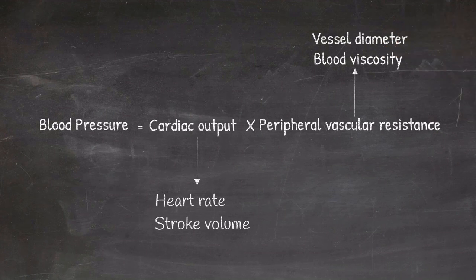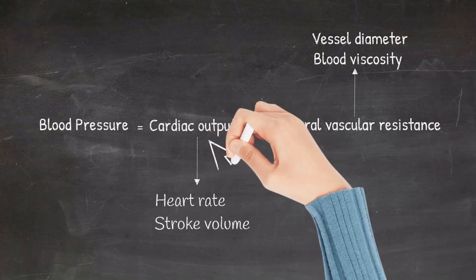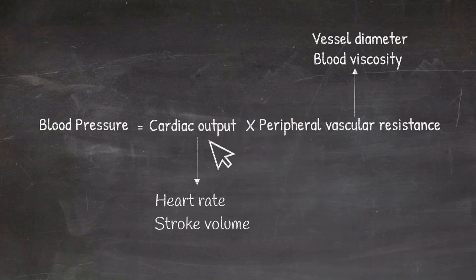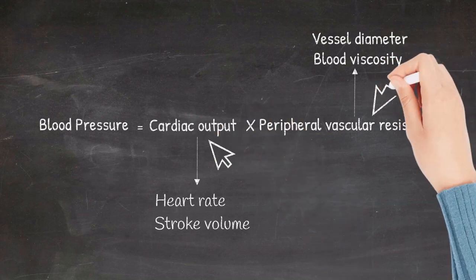So when you design an antihypertensive drug, most of these drugs act either by reducing the cardiac output or by reducing the peripheral vascular resistance.